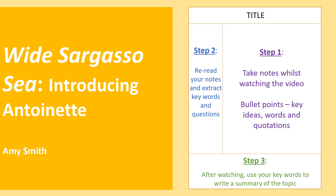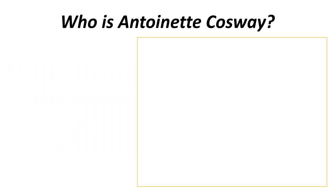Hello, this is the second video in a series on the novel Wide Sargasso Sea. In this video we're going to look at the character Antoinette and have a bit of an introduction to her in the novel. Make sure you're taking notes as you're watching this — I've put the Cornell note-taking template here on the side. So pause the video, draw the template, and then let's get ready to go.